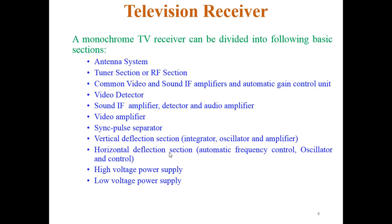A monochrome television receiver is divided into the following sections: antenna section, tuner section or RF section, common video and sound IF amplifiers and automatic gain control unit, video detector, sound IF amplifier, detector and audio amplifier, video amplifier, synchronous pulse separator, vertical deflection section, horizontal deflection section, high voltage power supply, and low voltage power supply.